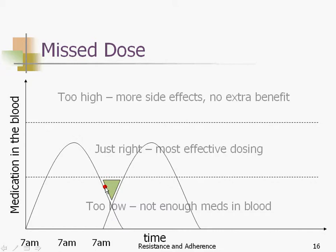If HIV reproduces in that window, remember, it messes with its own genetic code — it's trying to make photocopies of itself. It might make viruses that have small changes that can live. So the next time you take a dose, if it got to make copies with small changes that allow them to survive while the medication is present, the medication stops doing good. We're not talking about a single missed dose — we're talking about a window here, and then a window here, with regular attempts by HIV to reproduce.